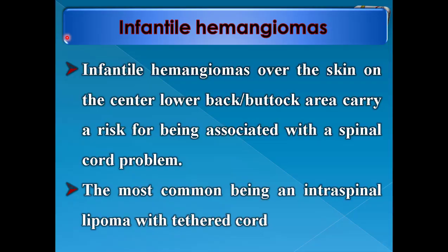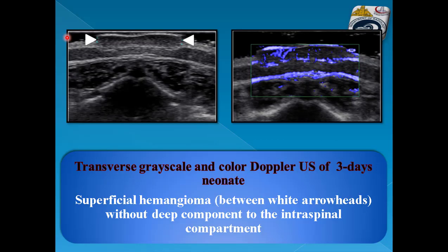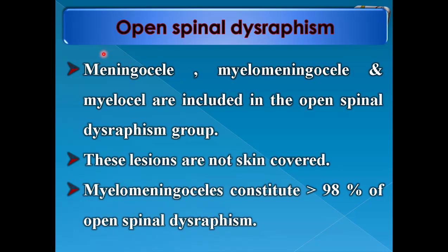Infantile hemangioma over the skin on the center lower back and buttock area carries a risk for being associated with a spinal cord problem, the most common being an intraspinal lipoma with tethered cord. This is an example of transverse grayscale and color Doppler ultrasound of a three-day-old neonate. The superficial hemangioma in the skin is shown by B-mode ultrasound, and by color Doppler there is increased vascularity but without intraspinal extension — confirming it is a superficial hemangioma of the skin.